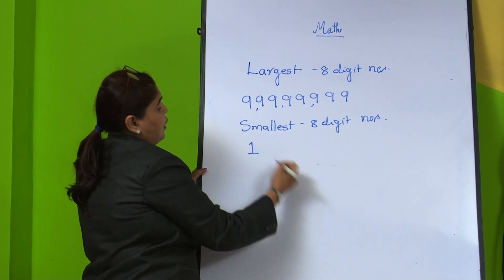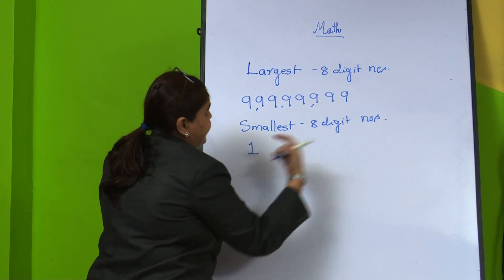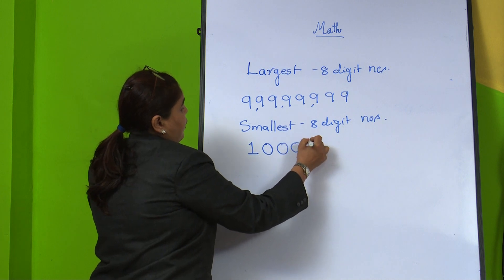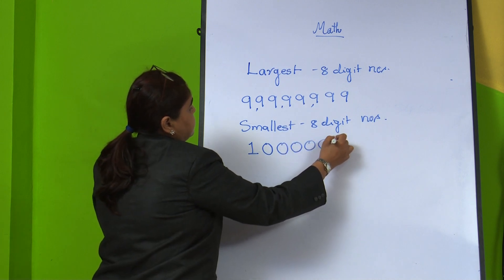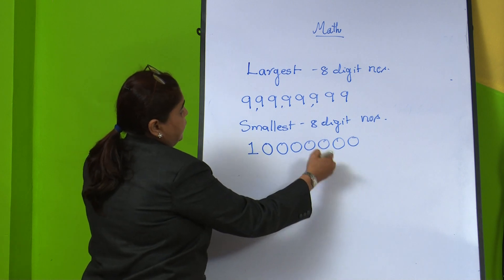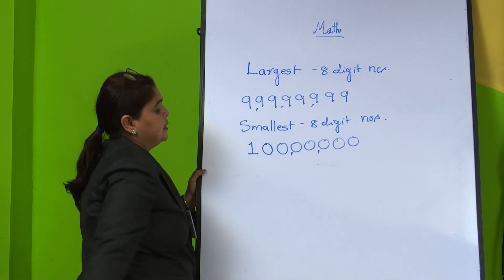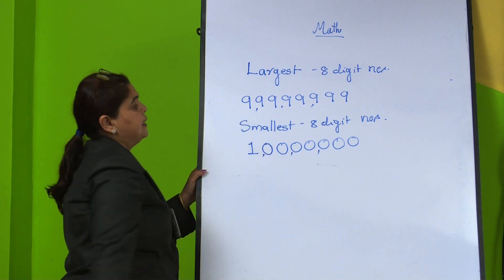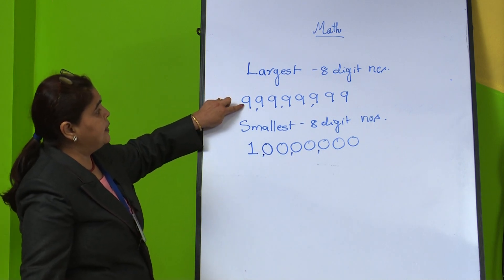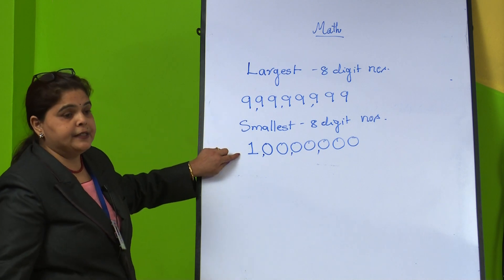The smallest 8-digit number: we write 1 first, and including that 1 it should be 8 digits total — so 1 followed by seven 0s. Insert comma after 3 digits, after 2 digits, and after 2 more digits. So the largest 8-digit number is 9,99,99,999 and the smallest 8-digit number is 1,00,00,000.